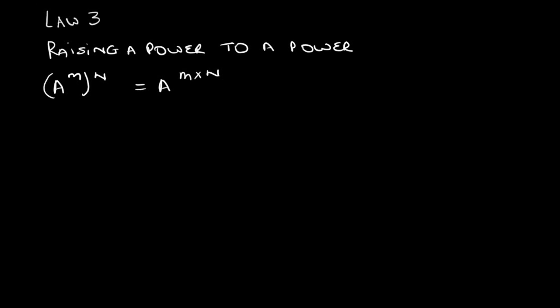In other words, if we have a to the power m inside the bracket to the power n outside the bracket, we would say that that is a to the power m times n.